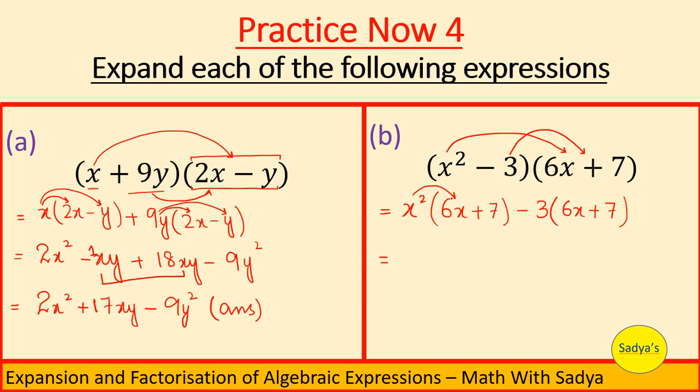Now apply the distributive law. X squared into 6x is equal to 6x cube. Remember that when same variables are multiplied, the powers are added. And here, x has power 1. When no power is written, it means the power is 1. So when we have multiplied x square with x raised to the power 1, powers were added. Plus, x squared into 7 is 7x squared.